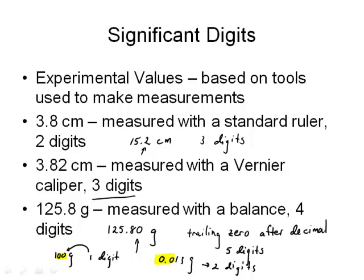Zeros in the middle of a number are. So if I said 208 grams, this zero here in the middle is significant. I know the value of this mass right down to one gram. And so there are three digits here in 208 grams.